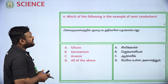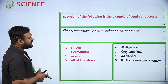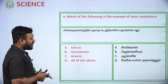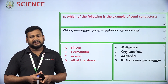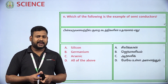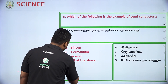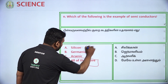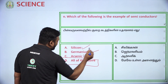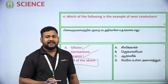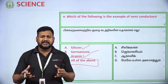Which of the following is an example of semiconductors? Options: silicon, germanium, arsenic, all of the above. Silicon is a semiconductor, germanium is a semiconductor, and arsenic is a semiconductor. So option D — all of the above — is the answer.